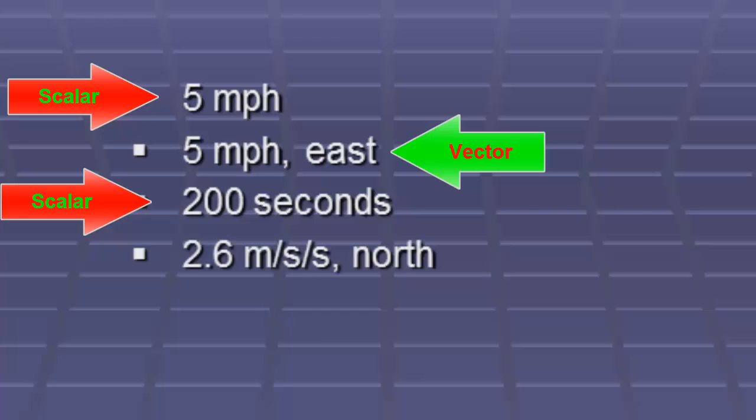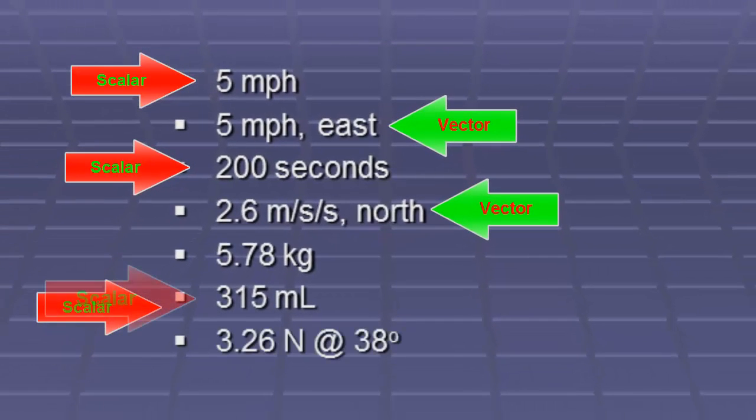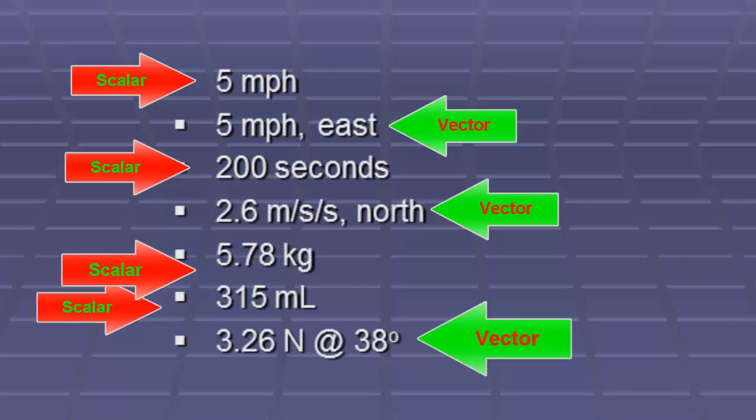2.6 meters per second per second north. Vector. 5.78 kilograms. Scalar. 315 milliliters. Scalar. 3.26 newtons at 38 degrees. That 38 degrees constitutes a direction. Therefore, it is a vector.